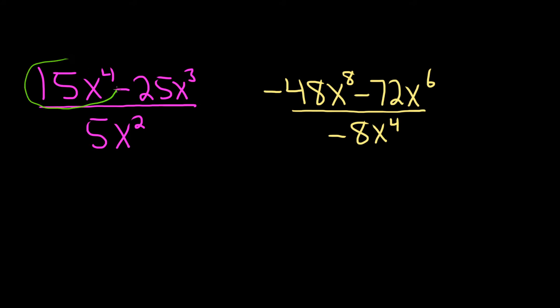So it'll be this piece here divided by the bottom. So 15x to the fourth over 5x squared. Then you put a minus sign and then it's the next one. So 25x cubed over 5x squared.